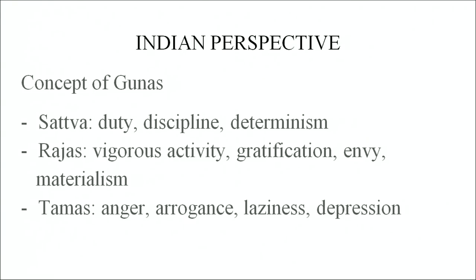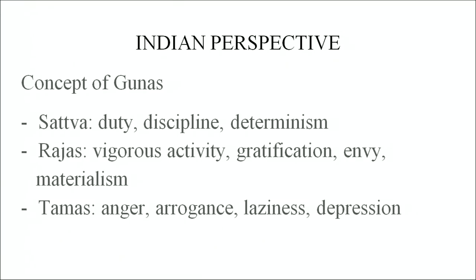Now let us come to the Indian perspective of personality. As per the Indian perspective, we all have three Gunas: the Sattva Guna, the Rajas Guna and the Tamas Guna. These three tend to define our personality. All of us have these three Gunas in larger or lesser amounts. Some people strive for a higher Sattva Guna; some tend to stay in the Rajas or Tamas Guna. They are required at different times and together create an entire whole. Sattva talks about duty, discipline and determinism. Rajas is vigorous activity, gratification and materialism, and Tamas is rooted in anger, aggression, arrogance, laziness and at times mental imbalance and depression.